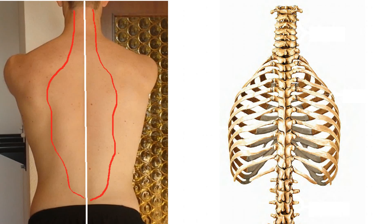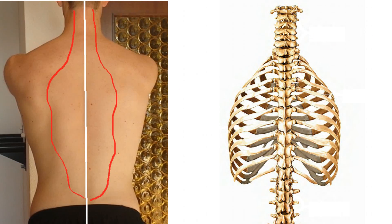Each vertebra in your spine has one spinous process and two transverse processes. These are connected with your spinal erectors — for example, from a spinous process to a transverse process, or between each other, or they jump over one another.